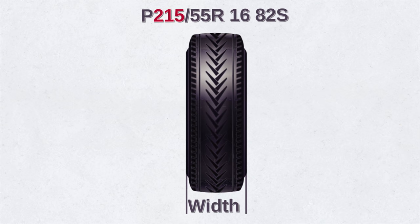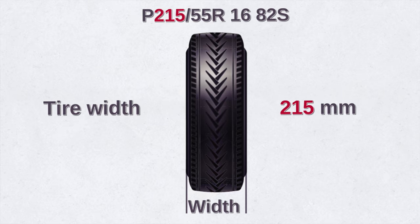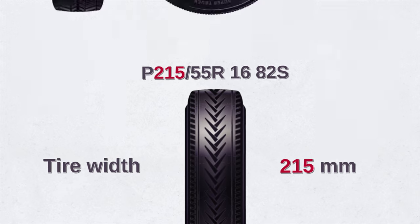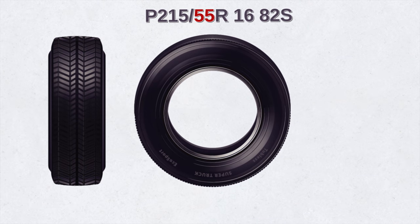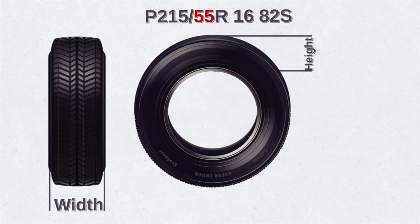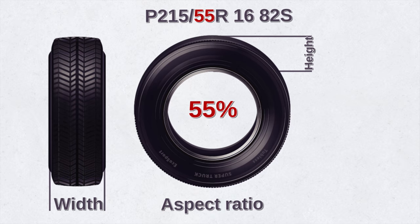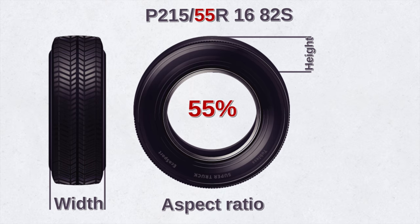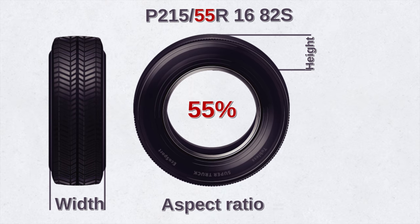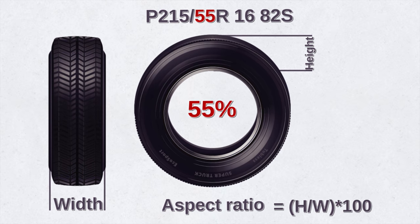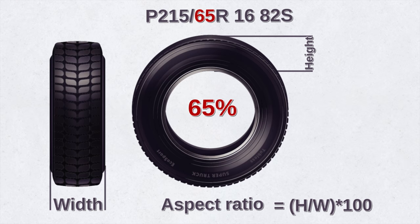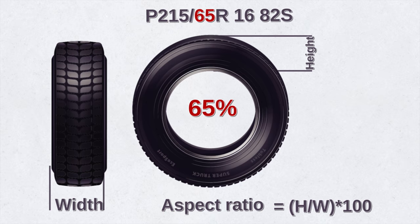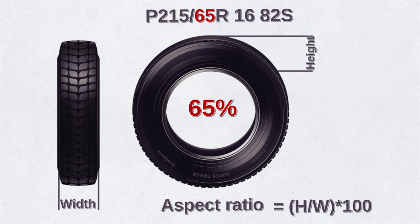After the first letter you'll see a set of three digits — that's the tire width from side to side when you look at the tire head on. It's the measurement taken from the outer sidewall to the inner sidewall in millimeters. Next you see a forward slash, followed by a set of two digits. This indicates the aspect ratio. The bigger the aspect ratio, the higher or taller the tire's sidewall or profile. The ratio is a percentage — basically the sidewall height divided by the tire width.